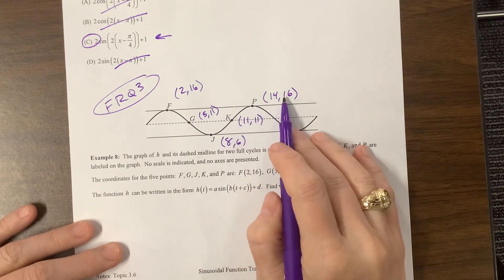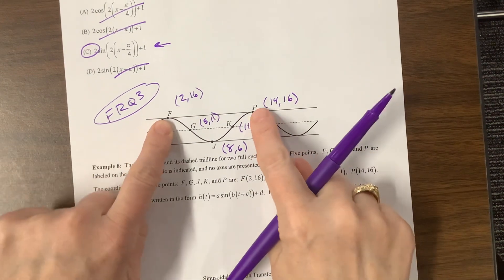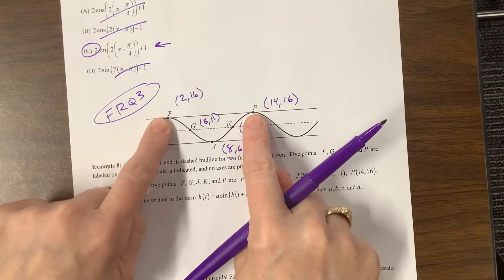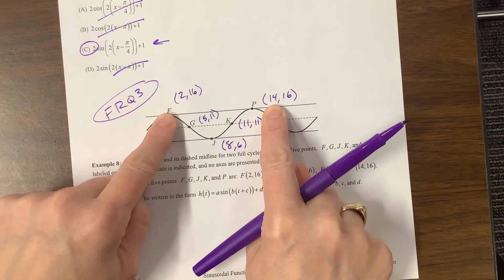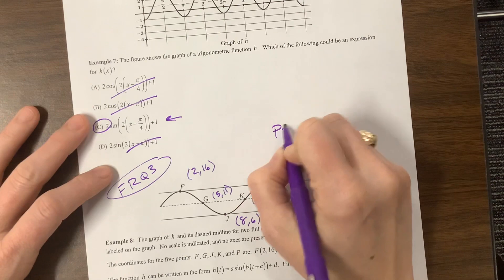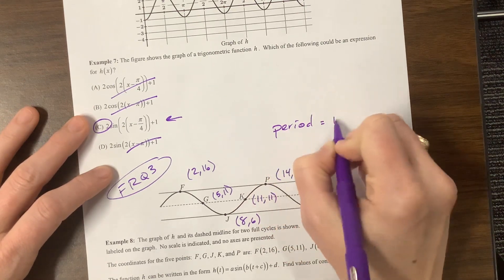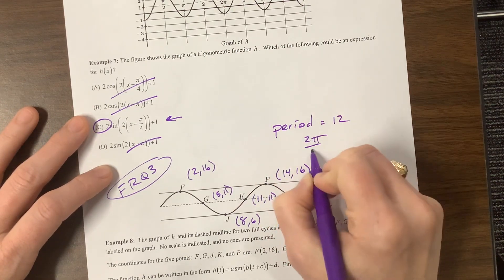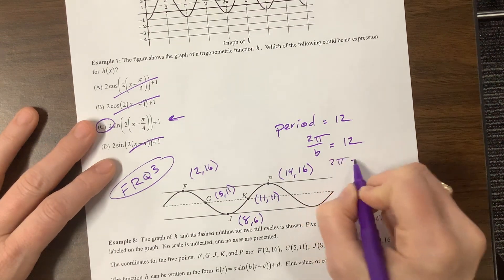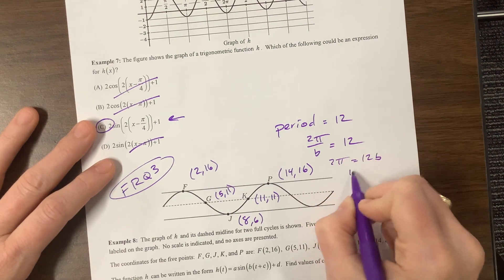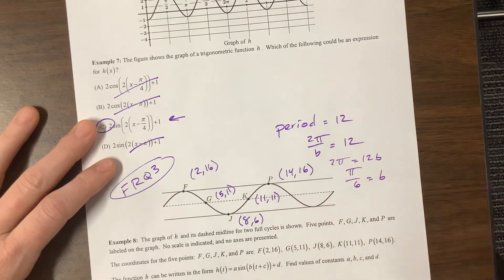What we notice is we started at the very top, we get back to the very top 12 units later. So our period is equal to 12, and we have 2 pi over b needs to equal 12, which tells me 2 pi equals 12 b. Divided by 12 and reducing the fraction, I get pi over 6 equals b.